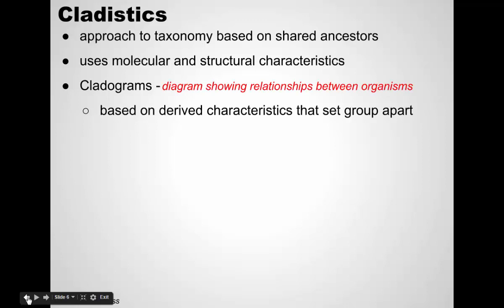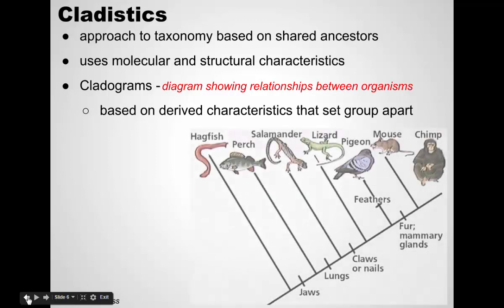We use a diagram often called a cladogram that can help show this. A clade is a group of organisms that all diverge from a common ancestor, and it's often based on what we call derived characteristics — characteristics that set a group apart. For example, we look at these organisms here in this cladogram, and we put them in groups based on these derived characteristics.